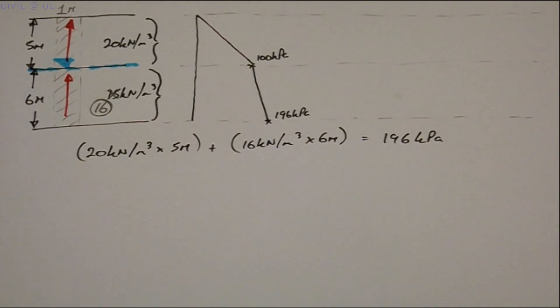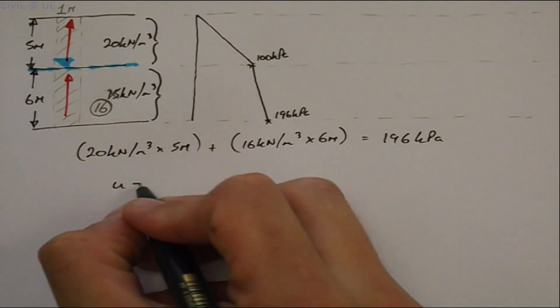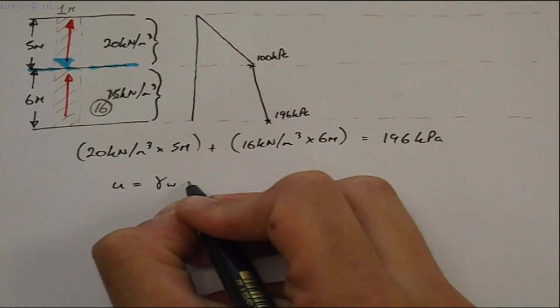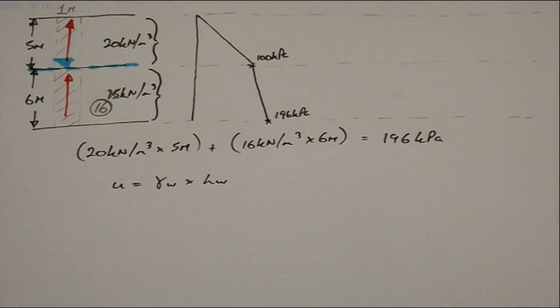As it fills the void spaces it develops a hydrostatic pressure equal to the unit weight of water times the height of water. This is an important finding. It only takes the filling of the tiny void spaces to develop full hydrostatic pressure.